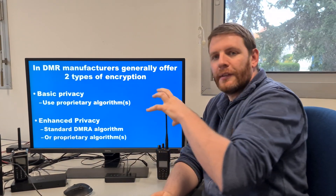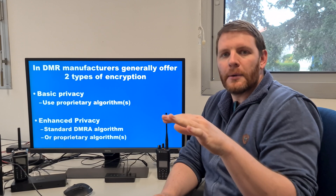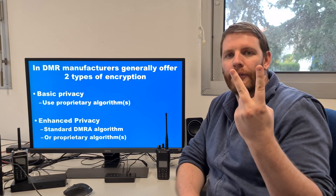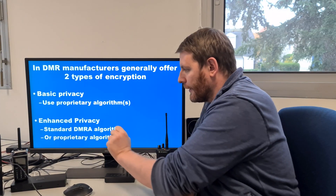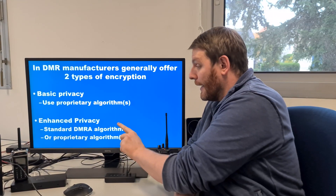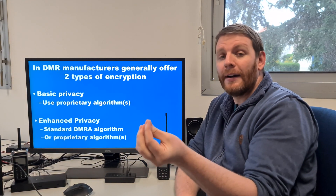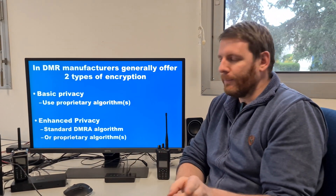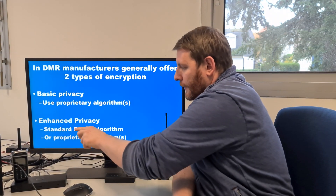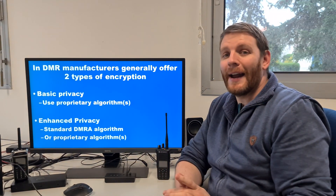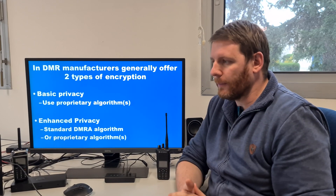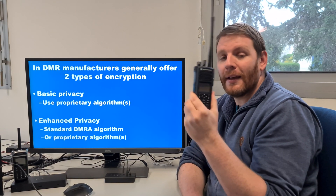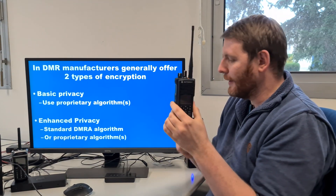Basic privacy algorithms are not compatible between manufacturers. For enhanced privacy, there are two types: the standardized DMR association algorithm — enhanced privacy RC4 and enhanced privacy AES — and also proprietary algorithms. In this video we will talk about the standard DMR association algorithm, which is the enhanced privacy RC4 or the enhanced privacy AES.